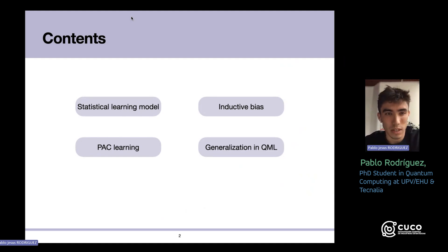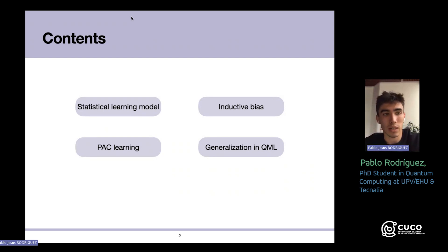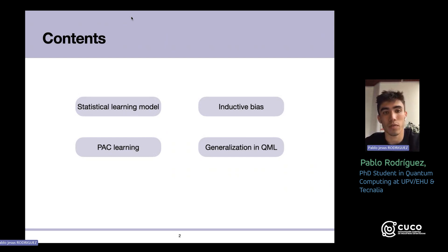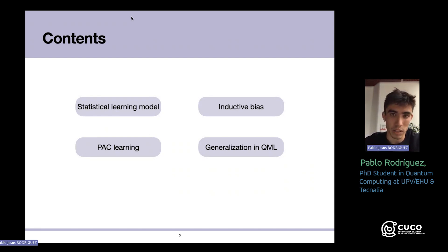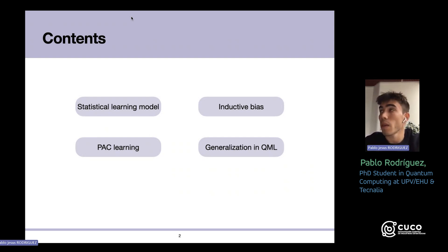I will introduce the statistical learning model, which is how we formalize the learning task. This is not about quantum — it's just the classical learning task where we have a learner, a task, and a goal. Then I will talk about inductive bias, which is a classical machine learning concept, and how it relates to the quantum models we usually design.